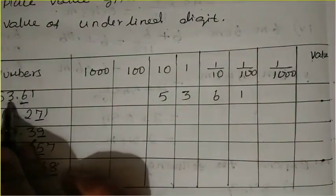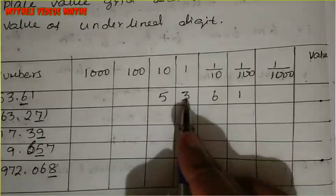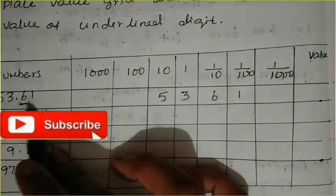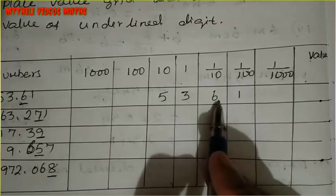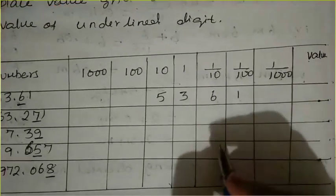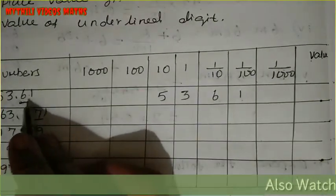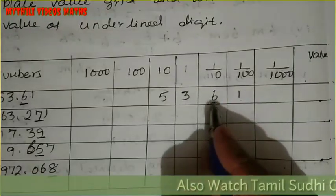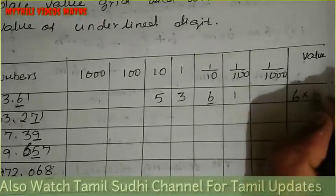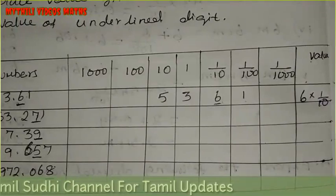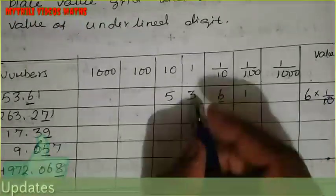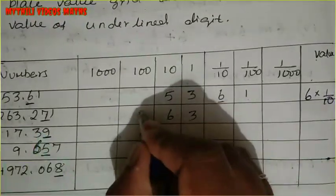Placing 53.61 in the grid: 5 goes in the tens place, 3 goes in the ones place, 6 goes in the tenths place, and 1 goes in the hundredths place.